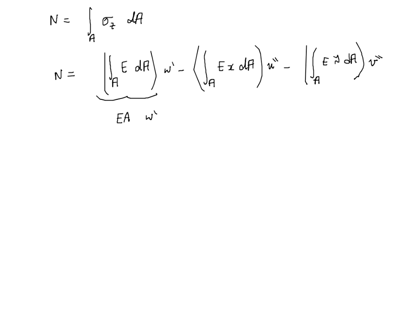If we choose the origin of the cross-section to be the centroid, then that first moment of area is going to be equal to zero. And the same goes for the third integral, which is the first moment of area around the x axis. And if we're talking about centroidal axis, this is also zero. So we end up with a simple relationship that says N equals EA times w prime.